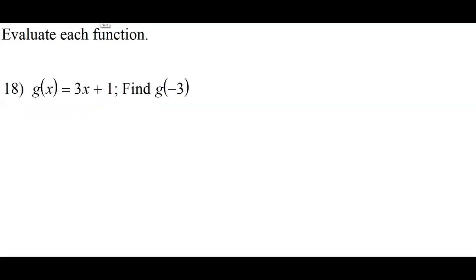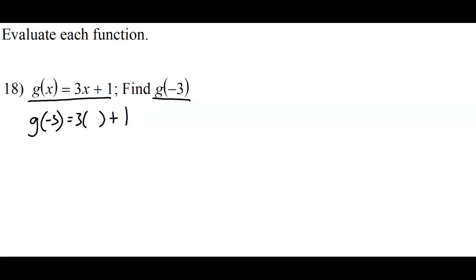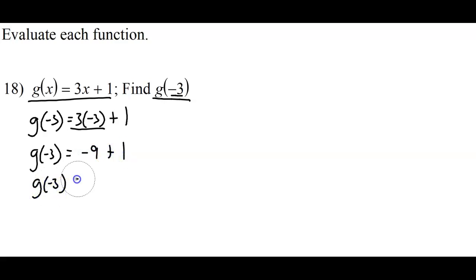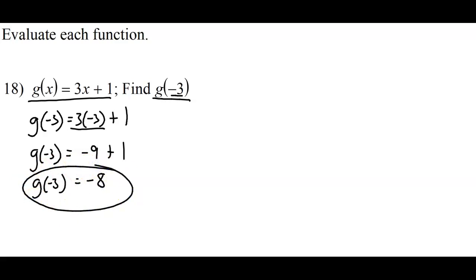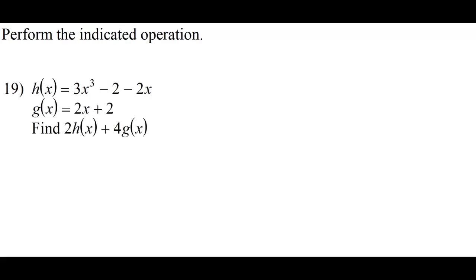Let's move on to our next topic — functions. One thing I want you to be able to do is, given a function, plug a value into it and get an answer. Pretty easy — just replace the x's with the number they give you, in this case negative 3, and then simplify. 3 times negative 3 is negative 9, and negative 9 plus 1 is negative 8. And there's our final answer.